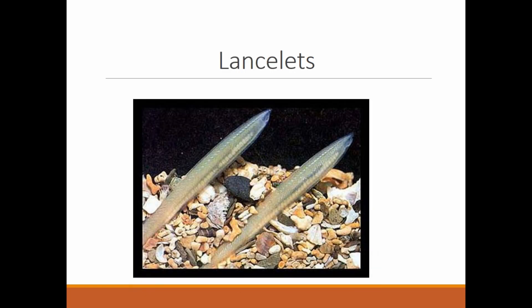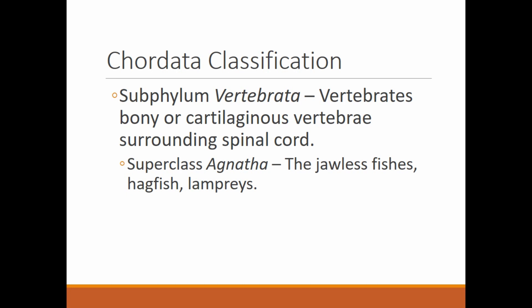Next we have the lancelets. You can see in this swimming organism the notochord and dorsal nerve cord running right through it, so they are members of phylum Chordata. Then we move to subphylum Vertebrata — the vertebrates. These are any organisms that have their dorsal nerve cord surrounded by a vertebral column, which is where we get the term 'vertebrate.' This includes both bony and cartilaginous vertebrae, such as sharks which have a cartilaginous skeleton but still form vertebrae that protect their spinal cord.